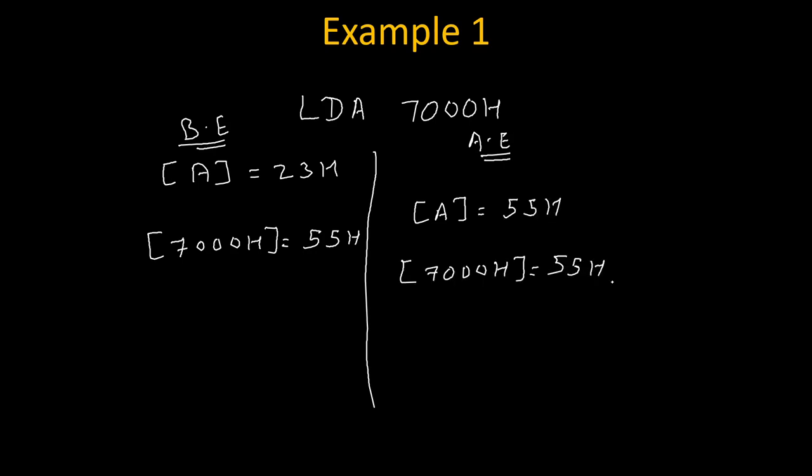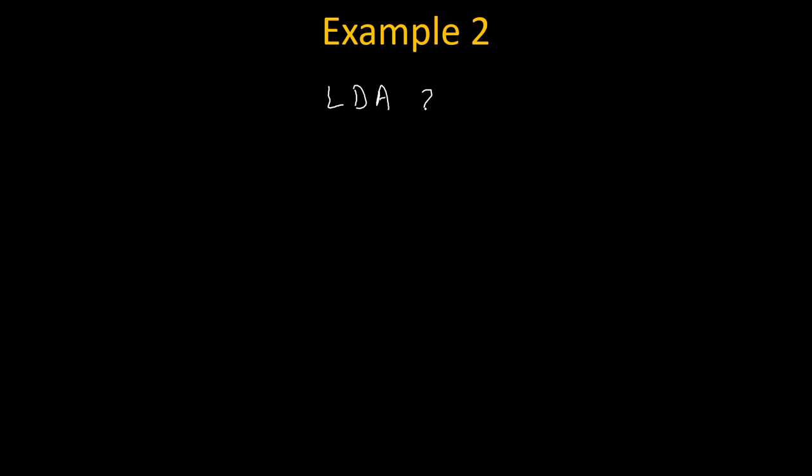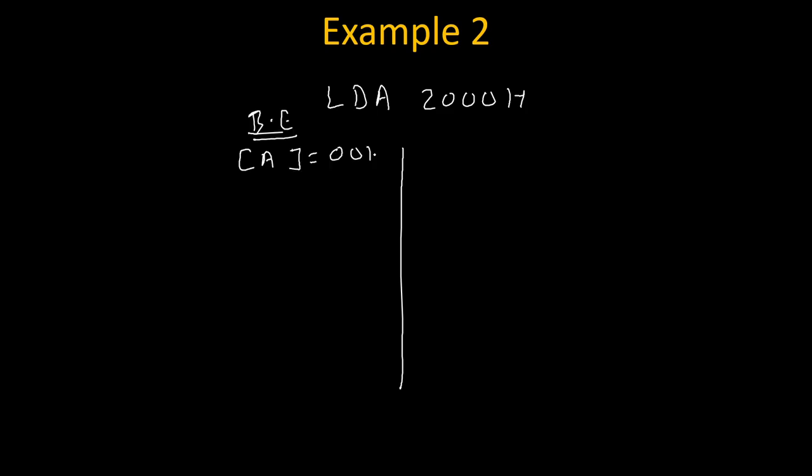Let's take one more example: LDA 2000H. Here 2000H is treated as the address. Before execution, suppose the accumulator is 00H and the content of address 2000H is 10H. Because of this instruction, 10H will get copied into the accumulator. Therefore, after execution, the accumulator will become 10H, while the content of address 2000H will remain unchanged at 10H.